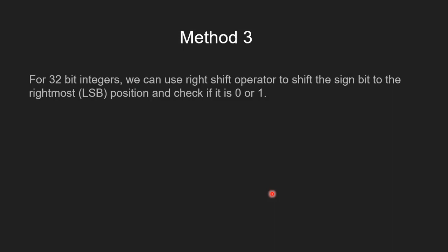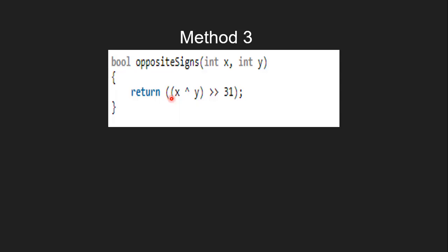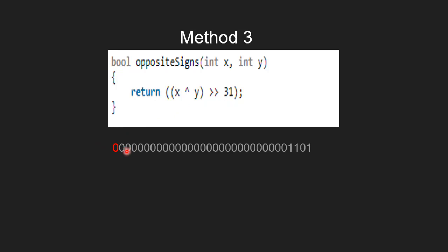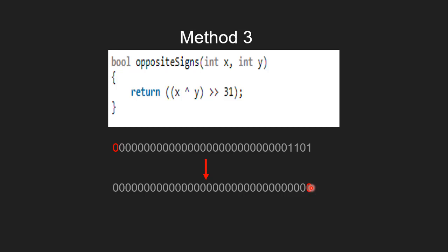Let's see the third method, which is quite similar to the first. For 32-bit integers, we use the right shift operator to shift the sign bit to the rightmost position and check if it is 0 or 1. We first perform XOR to find the result, then shift the sign bit by 31 positions to the right. If the sign bit is 0, we return 0 indicating same sign; if it is 1, we return 1 indicating different signs.